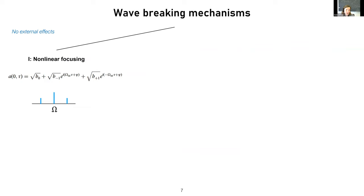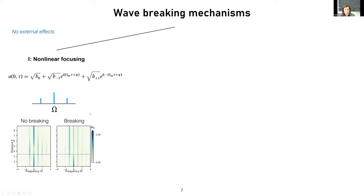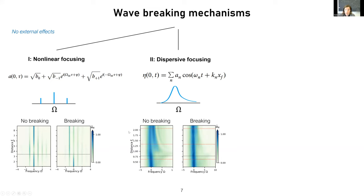In my understanding, if there are no external effects such as wind or currents, there are two ways for wave breaking to occur. The first is nonlinear focusing. If you have a plane wave perturbed by two sidebands, nonlinear interactions lead to modulation of the envelope. If this gets too steep, a wave can break. When this happens, the downshift to the lower sideband doesn't recur back to the initial condition but becomes permanent. The second way is if you have a continuous spectrum, like Gaussian or JONSWAP, but you tune the phases so they all have a maximum at a certain distance by positive interference.